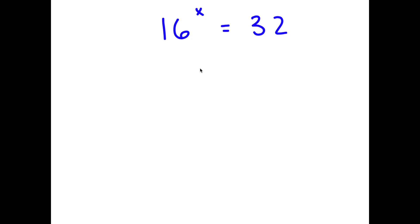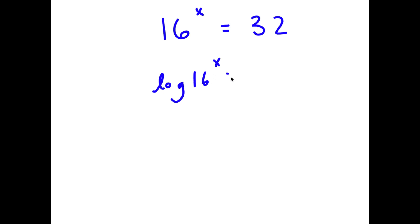In this problem I have 16 to the power of x is equal to 32. To solve this, I have multiple different methods. For my first method, I'm going to take the log on both sides, so log of 16 to the power of x is equal to log 32.